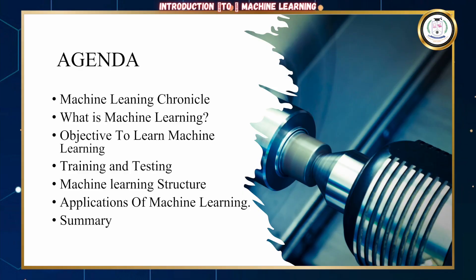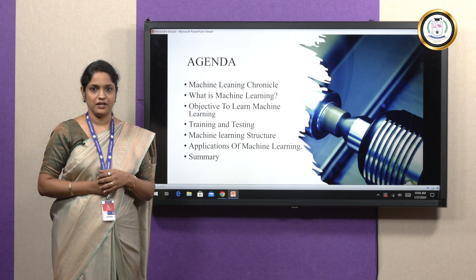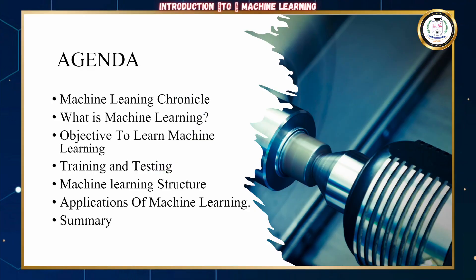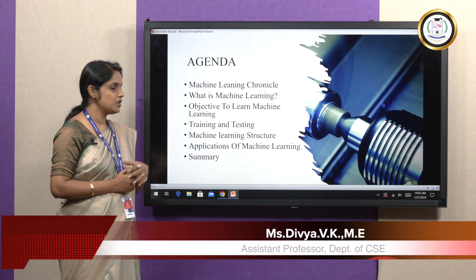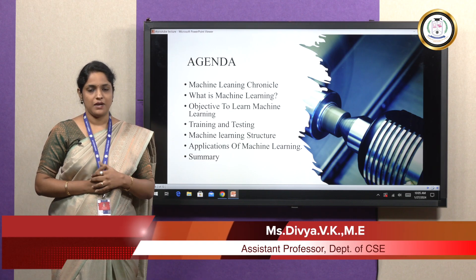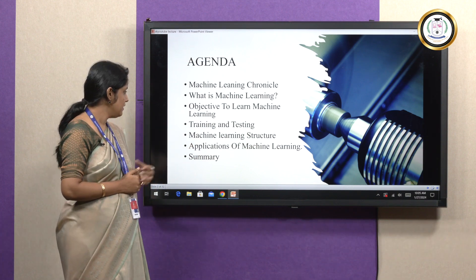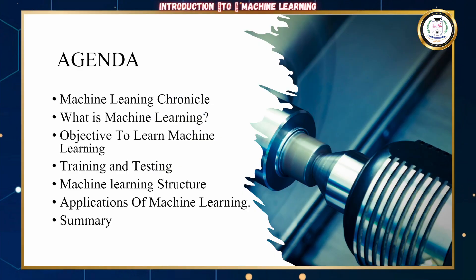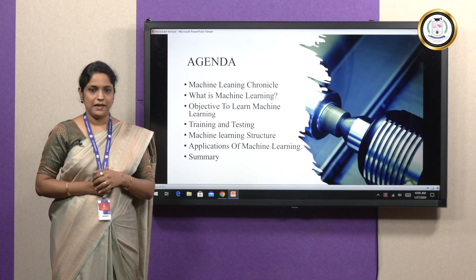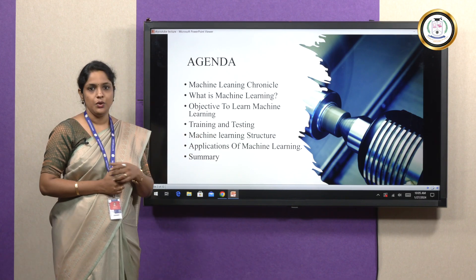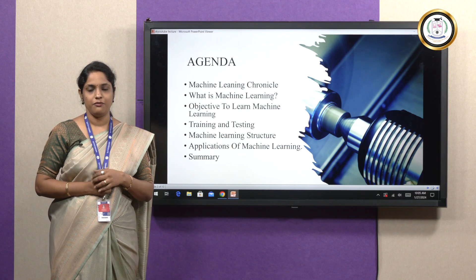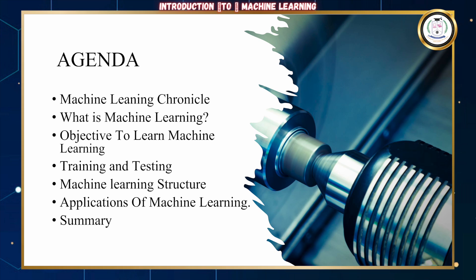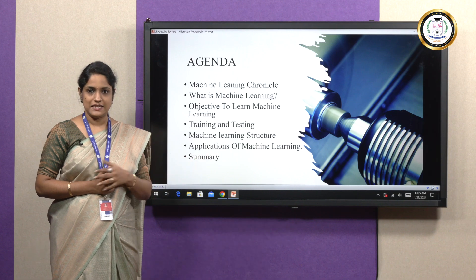The agenda goes this way. First, we will be seeing about the Machine Learning Chronicle, which will depict the history of machine learning, followed by what is machine learning — its definition and basic explanation — and then the objectives of machine learning, the actual need to learn it. Then we will see about training and testing datasets, which are the key components of ML, followed by the machine learning structure, which shows the basic structure and working of ML algorithms, followed by the applications of ML, and finally a quick recap of everything covered today.